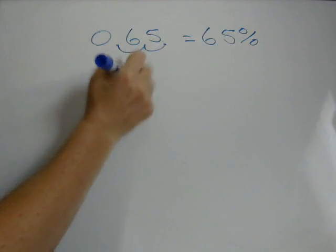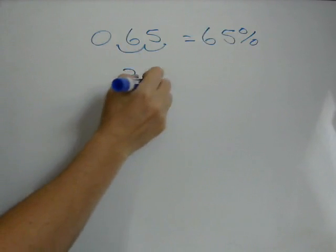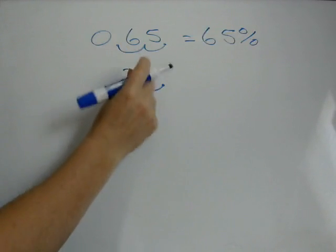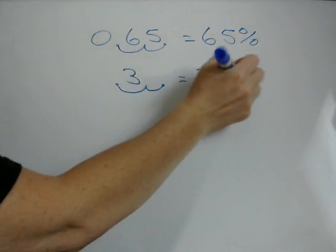If we had .3, we move it over two, one, two, well, we're going to have to add a zero here, so it's 30%.